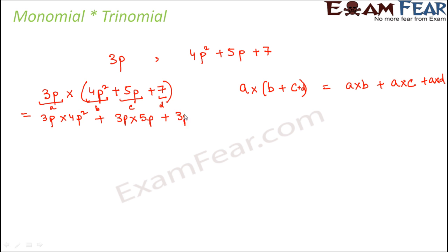So here 3p into 4p² - so 3 into 4 is 12, p into p² is p³. Similarly here 3 into 5 is 15, p into p is p². Similarly here 7 into 3 is 21 and p will be p. So 12p³ + 15p² + 21p would be the product.